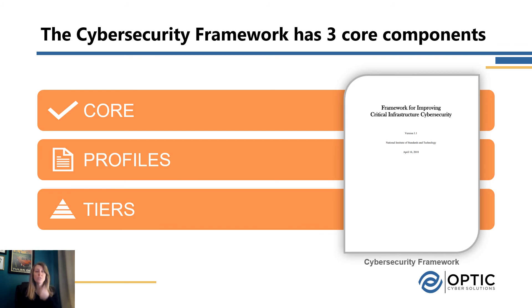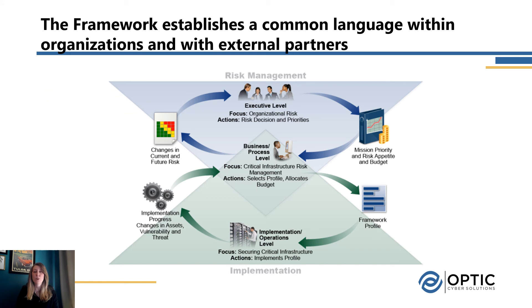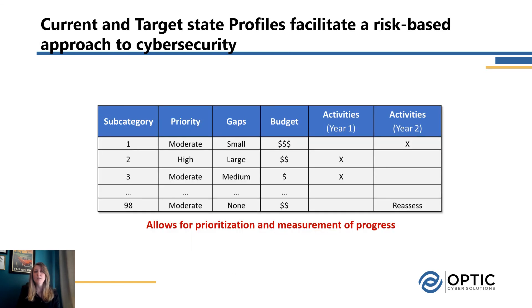The framework provides a great way to facilitate communication and drive consistency across organizations. One key value is the common language — it was written at a level that people from implementers to business level to the executive level and the board can use to have a conversation about cybersecurity. Additionally, the current and target state profiles help identify where you are today and where you need to be, enabling gap identification, prioritization, and budgeting to help prioritize activities across days, months, or even years.